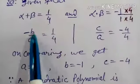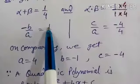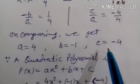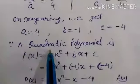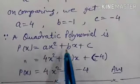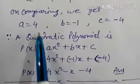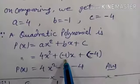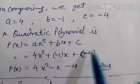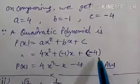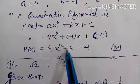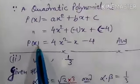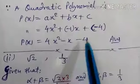Now, minus b equals 1, so transferring the minus sign to the right side, b equals minus 1. And c equals minus 4. Since the quadratic polynomial is p(x) equals x squared plus bx plus c, in place of a write 4: so 4x squared, plus b which is minus 1 (written in bracket) into x, plus c which is minus 4 (written in bracket). Simplifying: plus minus gives minus, so our quadratic polynomial is 4x squared minus x minus 4.